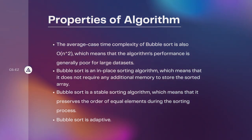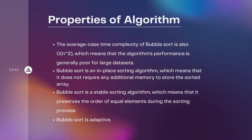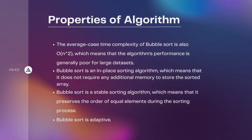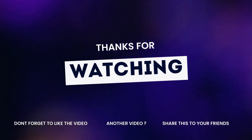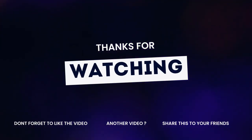Bubble sort has an adaptive nature, meaning that its performance can be improved for partially sorted or nearly sorted arrays. When the input array is already partially sorted, bubble sort can take advantage of this and reduce the number of comparisons and swaps needed. We can do so by imposing a condition that stops execution when no swapping is done in one pass. That's all for today. Hope you liked the video — I will upload new videos soon, till then keep learning.